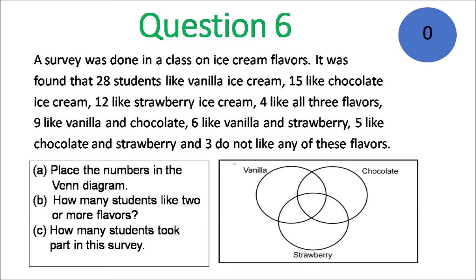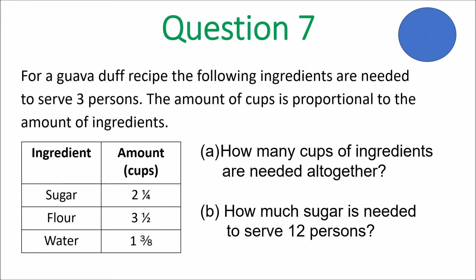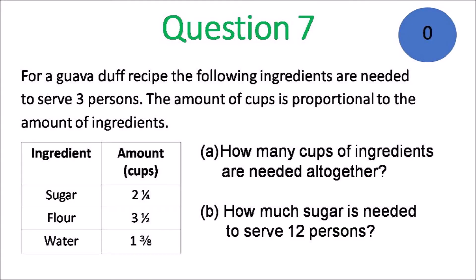Place the numbers in the Venn diagram. How many students like two or more flavors? How many students took part in the survey? Question 7. For a recipe, the following ingredients are needed to serve 3 persons. The amount of cups is proportional to the amount of ingredients. How many cups of ingredients are needed altogether? And B, how much sugar is needed to serve 12 persons?